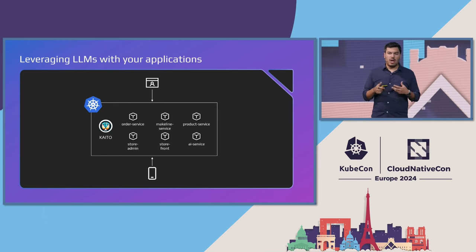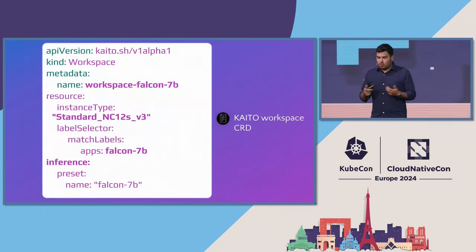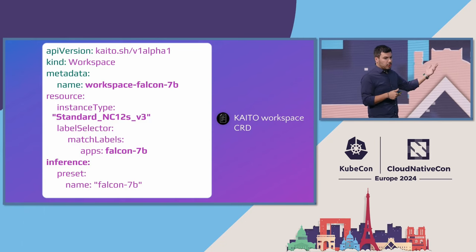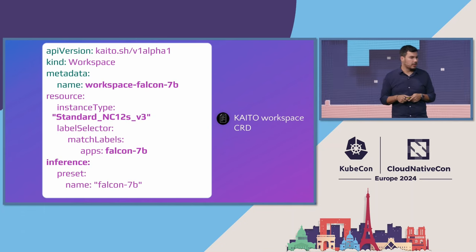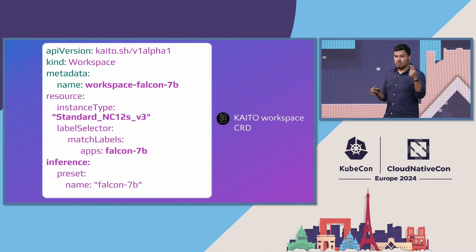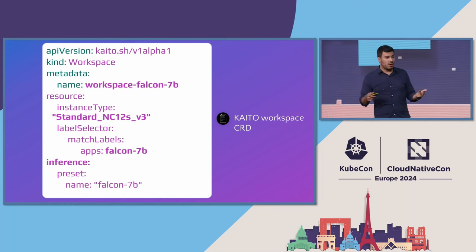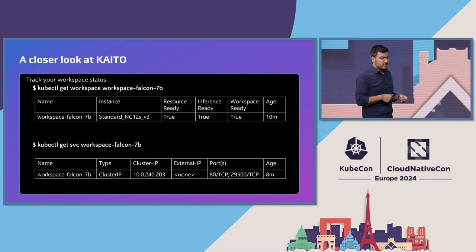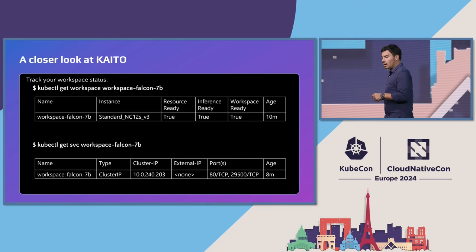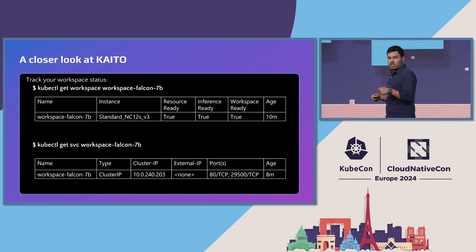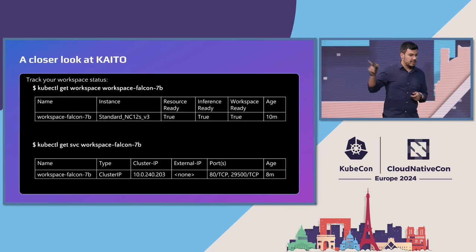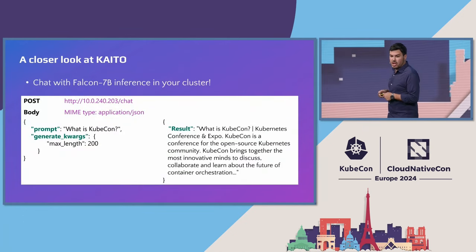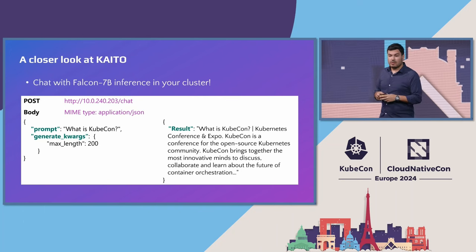You might be asking: how easy is it really? Pretty easy, actually. You pick the model you want — like Falcon — set up the preset, and select the infrastructure you desire. In two steps, you deploy Kaito and deploy the CRD, and you're ready to go. You can check when inference is ready, and Kaito even creates an inference endpoint so your application can leverage it right away as an HTTP server. That 10.240 IP has a slash chat endpoint you can immediately use with your application to make use of that Falcon model.